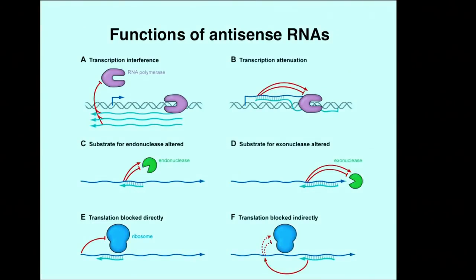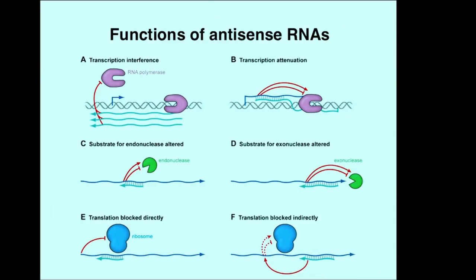My group has been interested in the problem: how many antisense RNAs are there really in E. coli? And from that, do all of them have function? How do we figure out which are the most interesting RNAs to pursue in terms of function? How do we get at function?